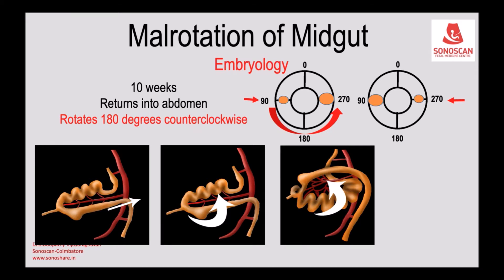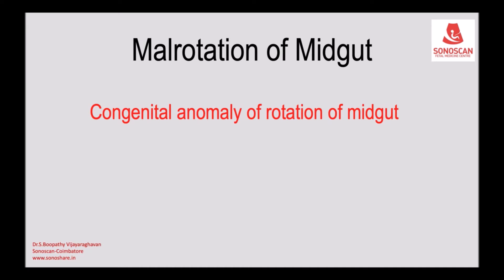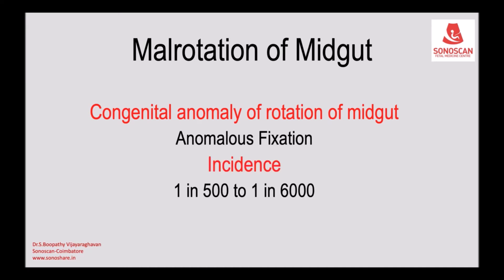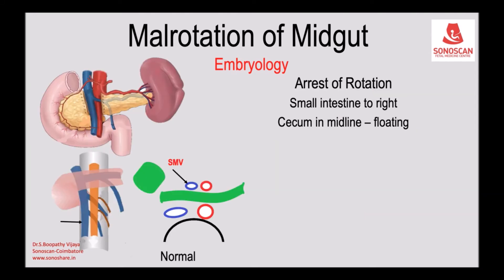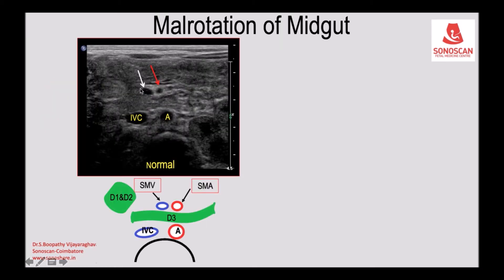An anomaly of the rotation of the midgut results in anomalous fixation, with the midgut remaining in the midline. In the normal relationship, the superior mesenteric vein is to the right of the superior mesenteric artery.